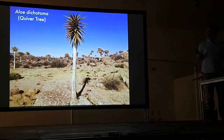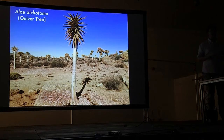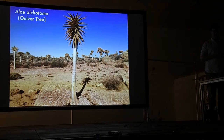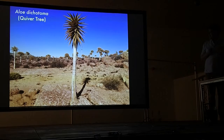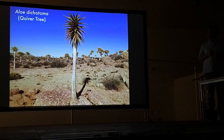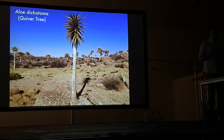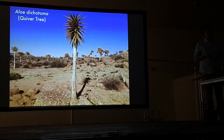On to my first tree aloe — this is Aloe dichotoma, known as the quiver tree. It's called the quiver tree because the native people in the past would use the hollowed-out stems to store their arrows. The epithet name dichotoma is a reference to the branching pattern of these aloes — they always branch into two.